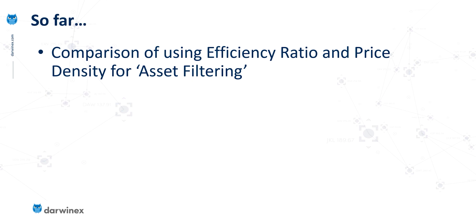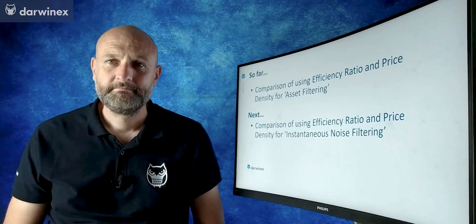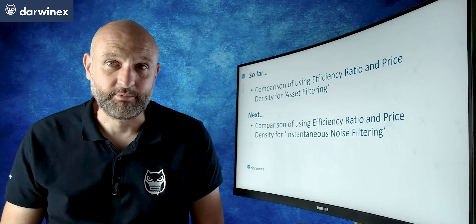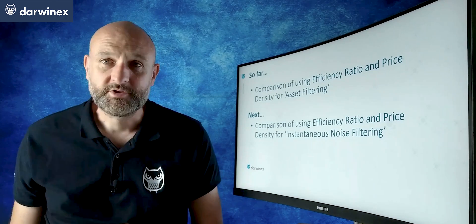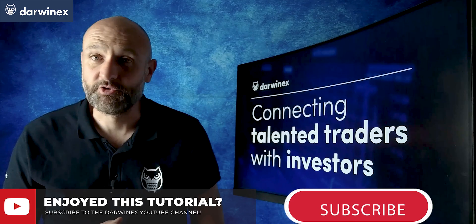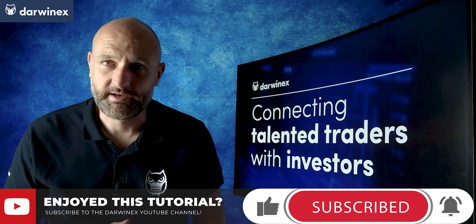Following on from this, in the next episode I'll actually be using price density again and comparing this to the efficiency ratio, but this time for the instantaneous noise filtering technique. So will the efficiency ratio come out on top again? Or maybe price density will be better when using this different technique. Be sure to tune in next time to find the results of that brief study. If that's already released, you'll see a link to it top right now. If you want to find out more information about what DarwinX does, you can click the link right underneath. But until next time, trade wise, trade safe.